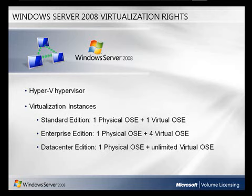When running two instances in Standard Edition — one physical and one virtual — or all five instances in Enterprise Edition — one physical and four virtual — the instance of the server software running in the physical operating environment may only be used to manage and service the operating system environments on the server. Any virtual instances beyond one for Standard, or four for Enterprise Edition, require additional Windows Server licenses. All users or devices accessing virtual instances of Windows Server will need a CAL.